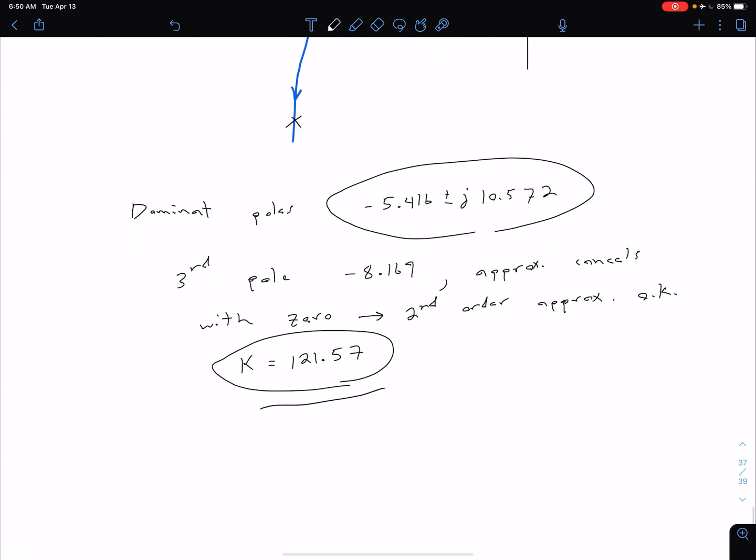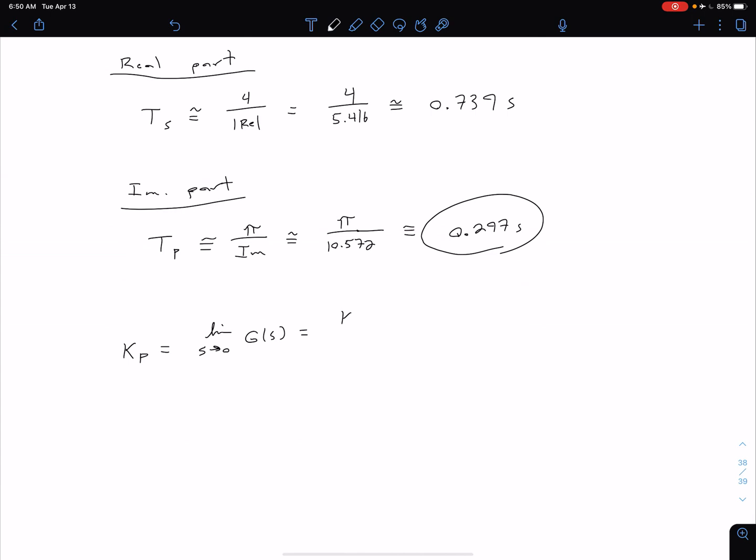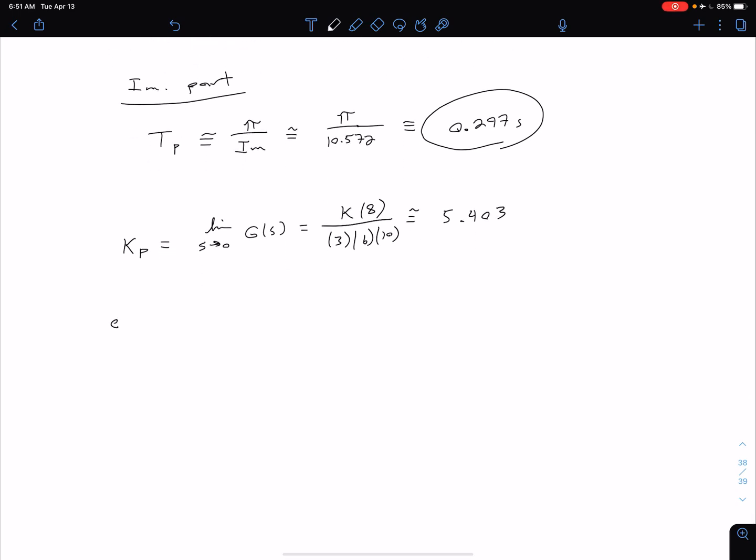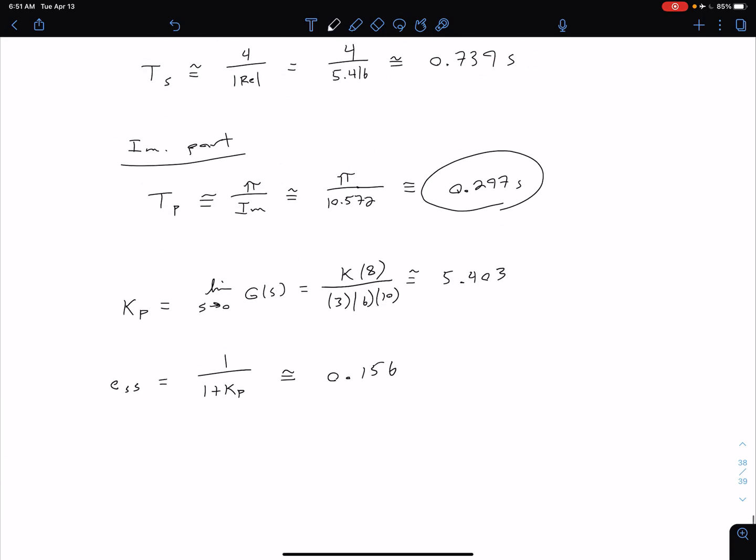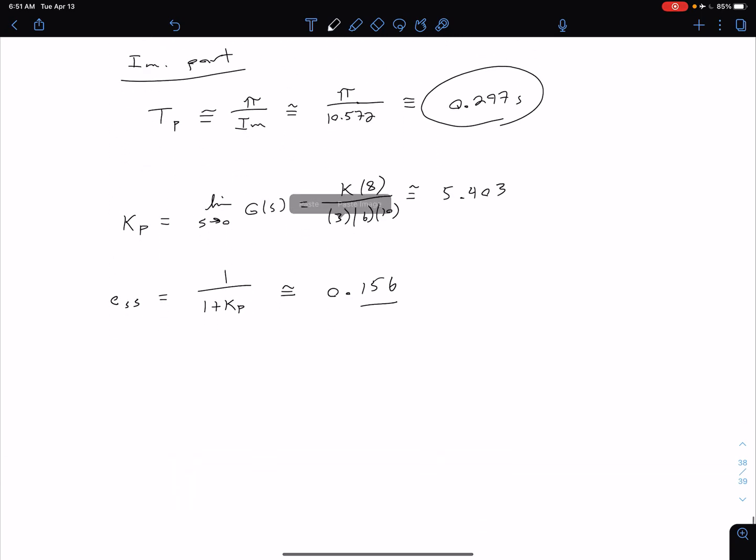And so, again, there's that gain value of 121.57. So we have K times 8 divided by 3 times 6 times 10. And so if we plug that in, we get that that is approximately 5.403. And for a type zero system, remember our steady state error is just going to be given by 1 divided by 1 plus KP. So plugging in that value of KP from above, we get a steady state error of about .156. And so we'll come back and talk about that. And we'll see how our transient design is going to affect that.